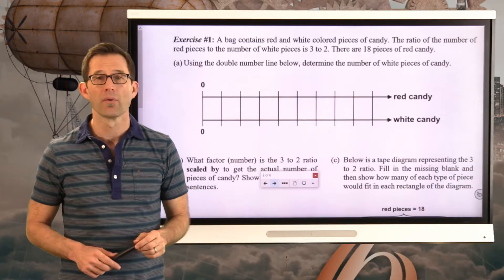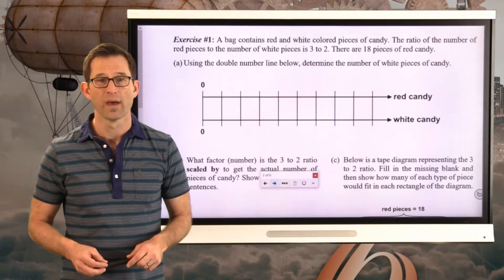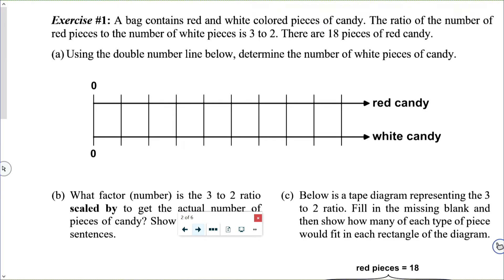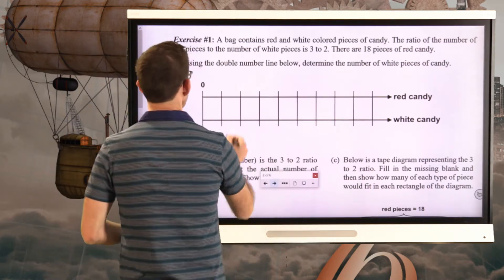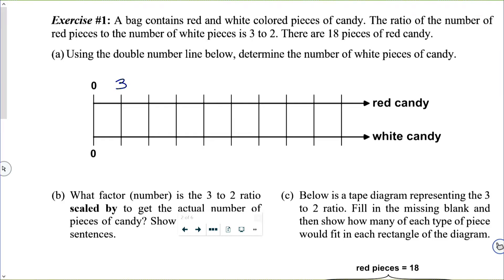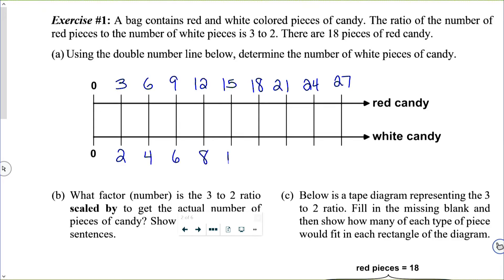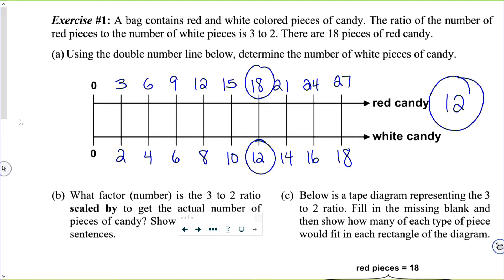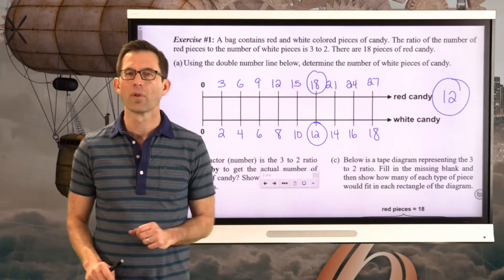We know there are 18 pieces of red candy and the ratio of red to white is 3 to 2. The red candy line goes by threes: 3, 6, 9, 12, 15, 18... and the whites go by twos: 2, 4, 6, 8, 10, 12... So with 18 pieces of red candy, there must be 12 pieces of white candy. A great use of a double number line to figure that out.